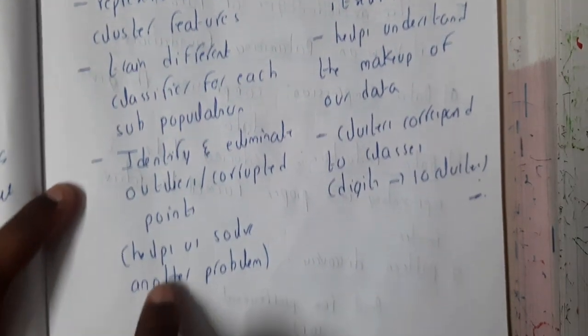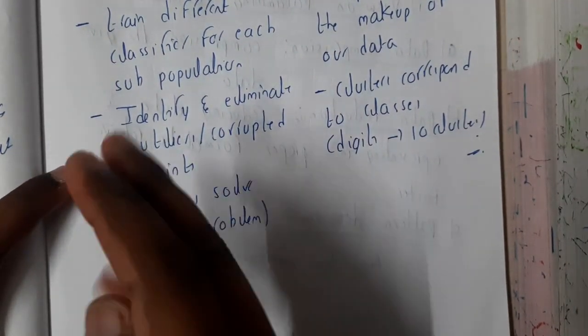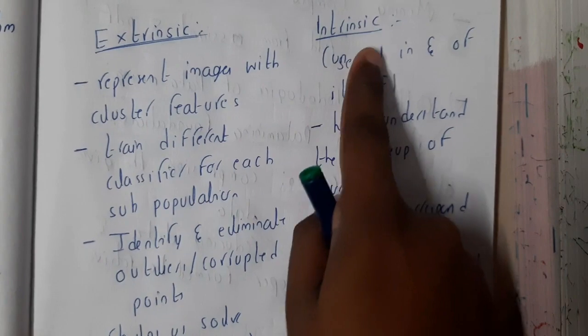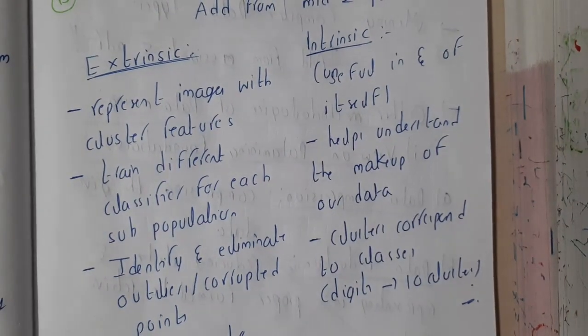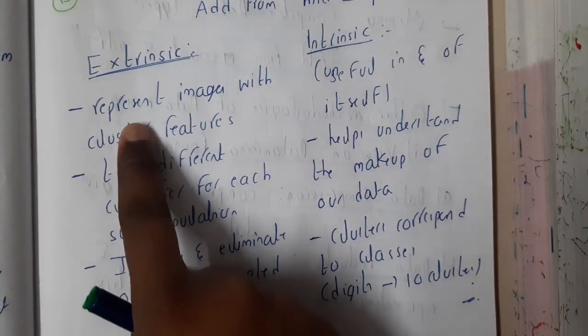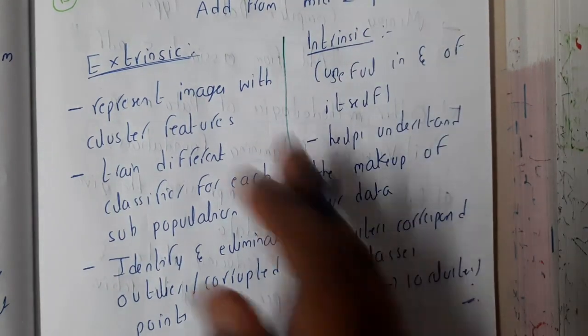The first way is extrinsic and the second way is intrinsic. So in extrinsic, this method will help other problems to be solved, whereas intrinsic will help itself to be solved.